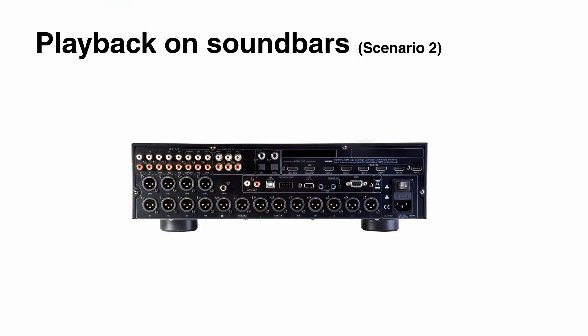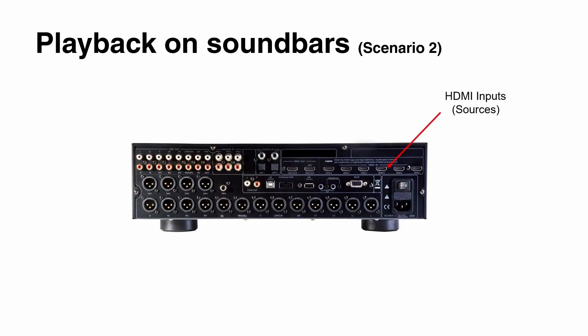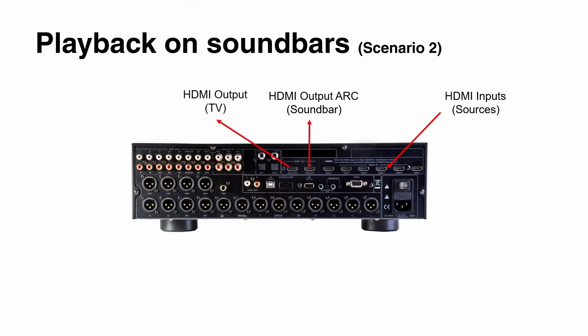Scenario two with soundbars: you can still use the AVR, which is handy when you have multiple sources to patch onto the soundbar. You use the HDMI inputs to feed the AVR from your streaming service, Blu-ray player, or any other HDMI-capable device. Then you take the HDMI output named ARC — Audio Return Channel — which transports only the audio information out of the HDMI stream. This is patched onto your soundbar, while your TV remains connected to the HDMI output.